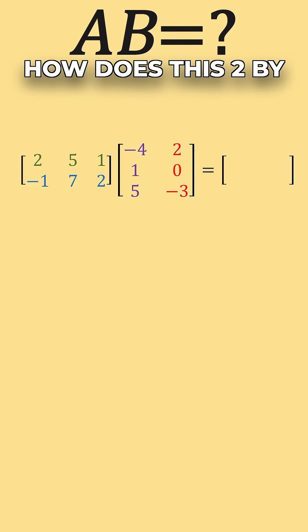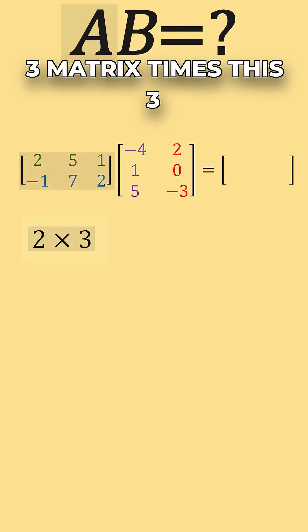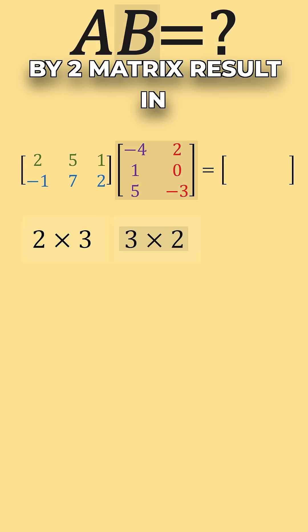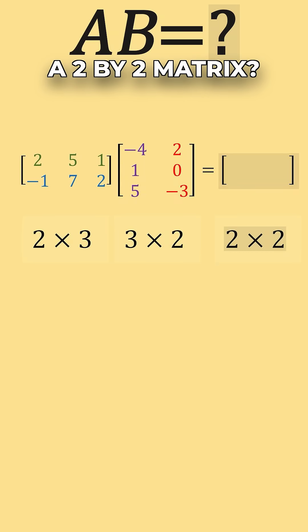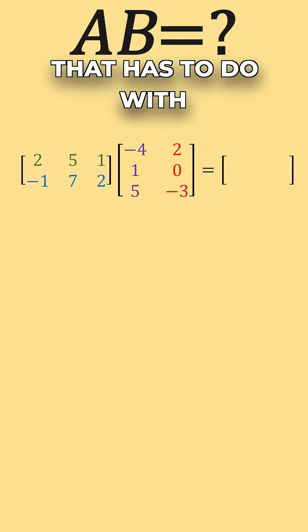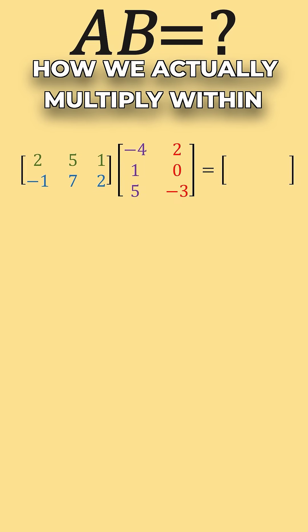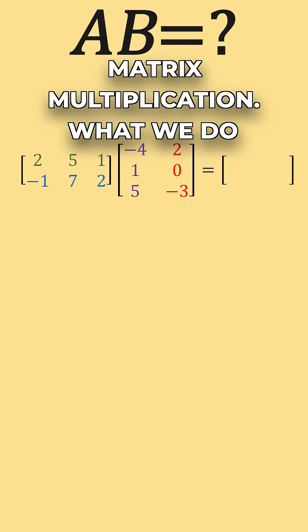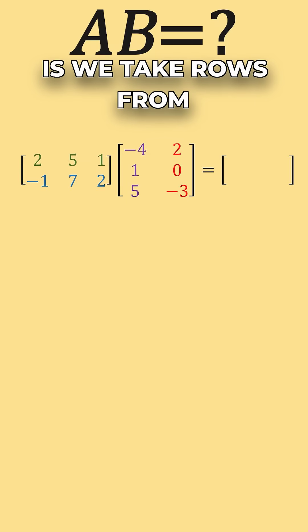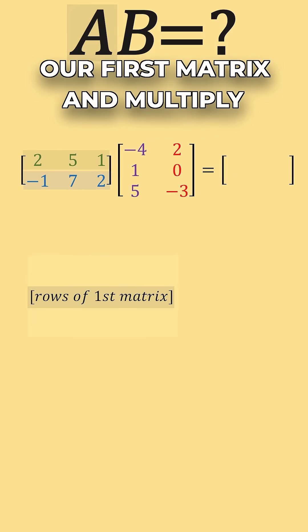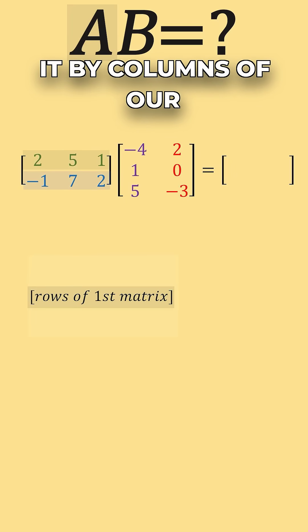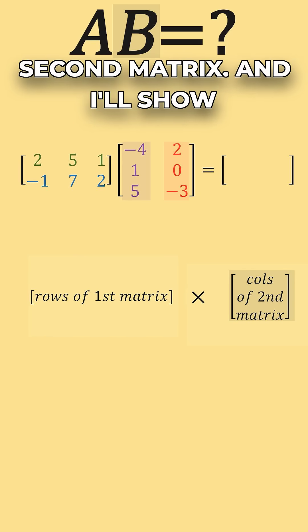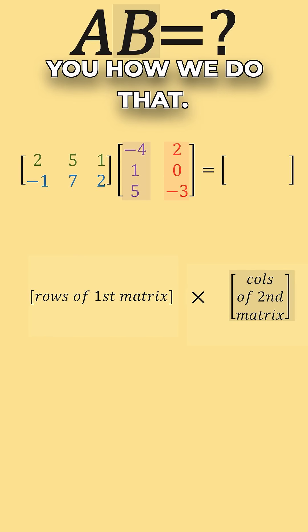How does a 2 by 3 matrix times a 3 by 2 matrix result in a 2 by 2 matrix? That has to do with how we actually perform matrix multiplication. What we do is take rows from our first matrix and multiply them by columns of our second matrix, and I'll show you how we do that.